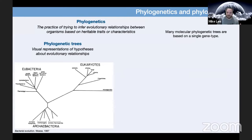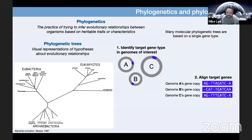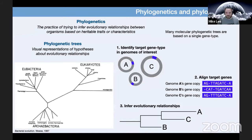Here are the main conceptual components of how single-gene phylogenetics is done. We would identify our target gene of interest in all of the genomes we want to look at — shown in blue in this cartoon. We then align these genes pulled from each genome, to compare them by capturing all the information about changes in one matrix. We then try to infer evolutionary relationships using some sort of evolutionary model that takes into account that not all changes are equally likely to have occurred.